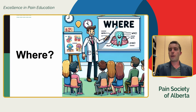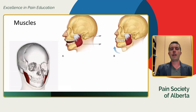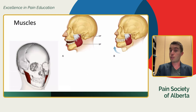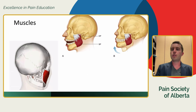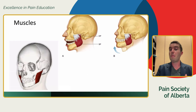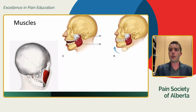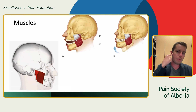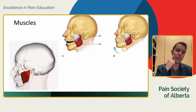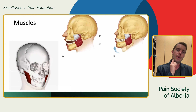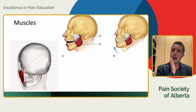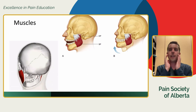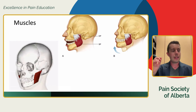Where do we actually feel jaw pain? Muscles are the most common source. The two most important muscles are the masseter — the big muscle on the side of our cheek, running from the zygomatic bone down to the mandible. One way to localize it: put your hands over the side of your face and clench — you'll feel a little bulge. That's your masseter. It's a jaw-closing muscle used constantly during chewing, talking, or teeth clenching.